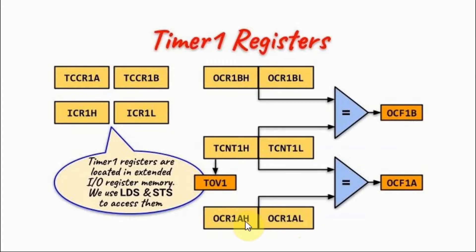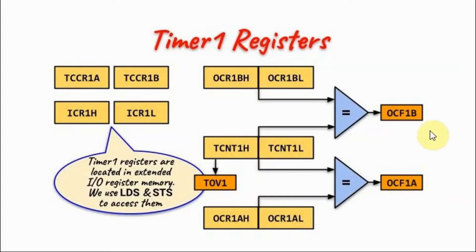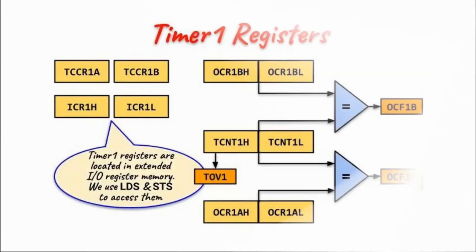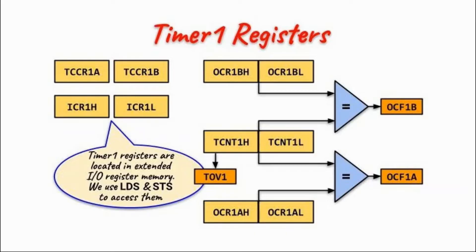Timer 1 in CTC mode has two output compare channels, Channel A and Channel B. Each channel has two 8-bit output compare registers: the high register and the low register. When the 16-bit value in this register equals the 16-bit value in the counter, it will set the output compare flag for either Channel A or Channel B.